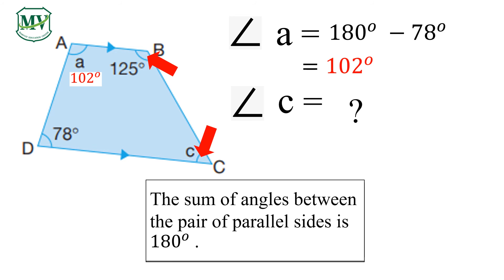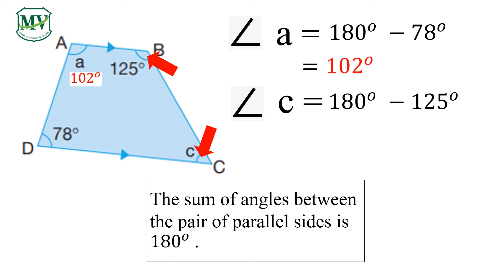How about angle C? We have 180 degrees minus 125 degrees is equal to 55 degrees. Did you get it? Awesome!